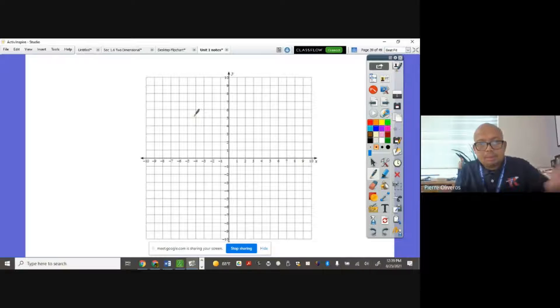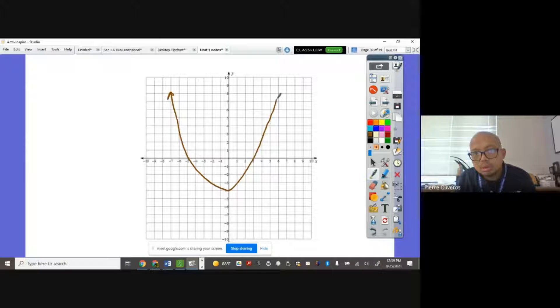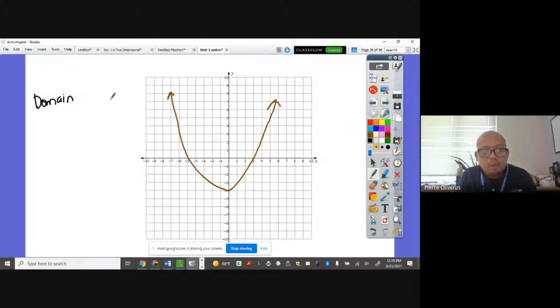So again, for example, we have here, let's say, a parabola. Let's stop right there. It goes like this. For us to know the domain of this function, of this graph, domain you look at from left to right. Domain look only at the x-axis.